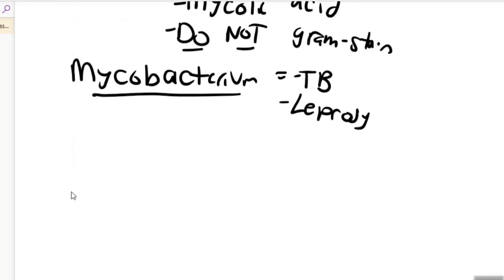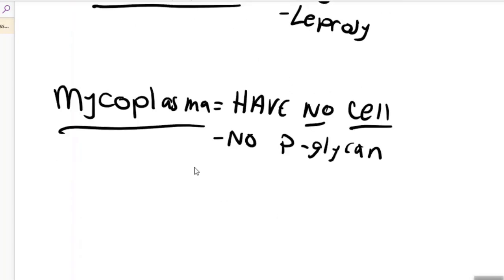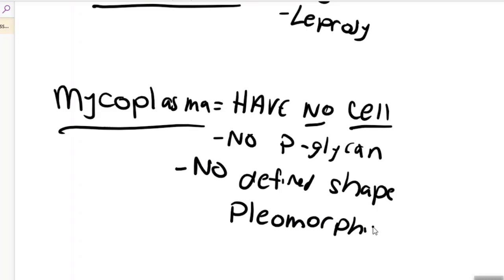The second oddballs are a genre called mycoplasma. Mycoplasma actually have no cell wall, which is very odd, meaning they have no peptidoglycan. They're like the one weirdo oddball bacteria that don't have peptidoglycan. Because they have no cell wall, they typically have no defined shape, so we call them pleomorphic. Pleomorphic means many shapes, no defined shape. Mycoplasma also caused some illnesses such as a form of pneumonia. Sometimes it might be hard to diagnose a mycoplasma infection because they have no cell wall. The gram stain will not work on them. They're not gram positive or gram negative.